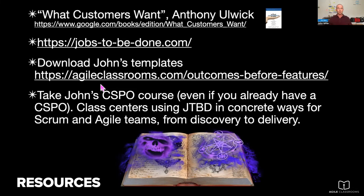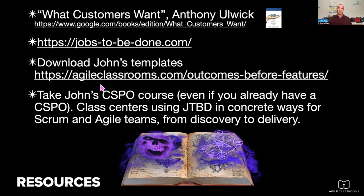Some resources if you want to explore more: an excellent book — one of the best I've ever read on product — called 'What Customers Want' by Tony Ulwick, who pretty much created this. It's comprehensive, dense but well worth it. Everything about how to use outcomes and jobs is in there — all the way to strategy. The website jobstobedone.com, originally called Outcome-Driven Innovation. My templates will be available there soon — right now the page is empty, but it's coming.